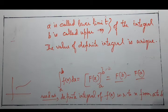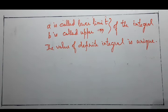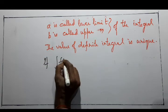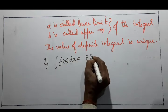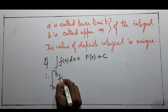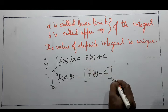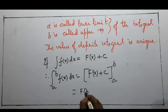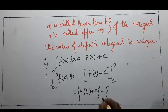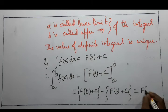In indefinite integration, for different constants of integration we get different functions. But for definite integrals, the value is fixed. If ∫f(x)dx = F(x) + C, then ∫(a to b) f(x) dx = [F(x) + C] from a to b = F(b) + C − F(a) − C = F(b) − F(a). The constant C cancels out.